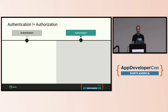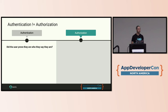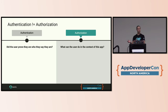Most people call this auth and don't differentiate. Authentication is: did the user prove that they are who they say they are? Back when I started in this industry, it was always a user ID and a password. Now it's magic links, passkeys, biometrics, and so on. Whereas authorization is: what can the user do inside of your application? What permissions do they have now that they're logged in?